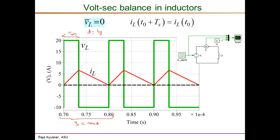For the remaining two-thirds of the period — the T-off interval, or (1−d)·Ts — a negative voltage of minus 10 volts is applied. Writing the volt-second balance equation: 20 × (1/3) + (−10) × (2/3) = 0. This confirms that volt-second balance has been satisfied.